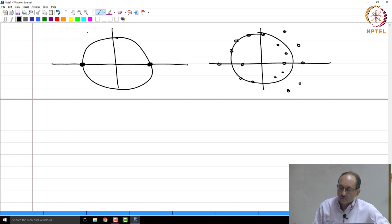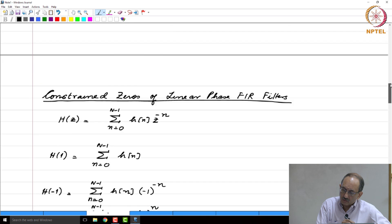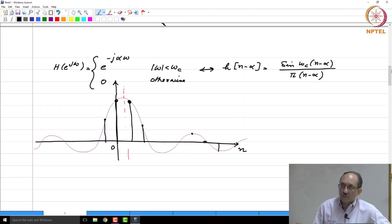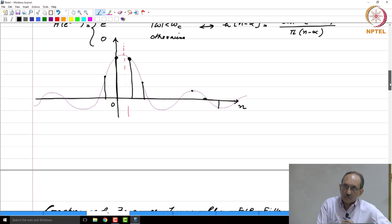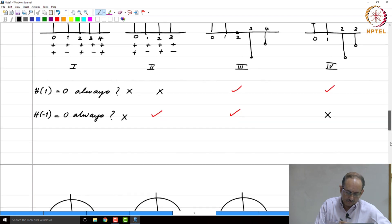Now, it is good to take stock of things. We have seen linear phase FIR filters, that is what the main topic of this has been the last few lectures. Then we also mentioned IIR filters. Here we pointed out symmetry is sufficient but not necessary for the IIR filter case. So the question is, are there linear phase IIR filters?